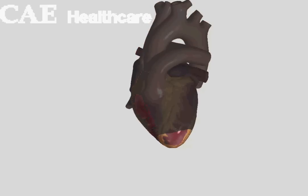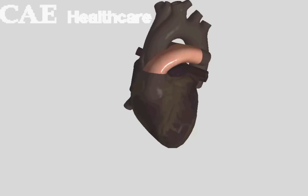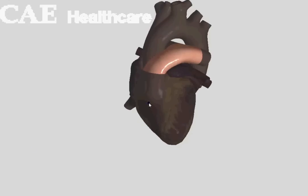That's the right ventricle. That's the apex of the heart. And that is, of course, the pulmonary artery. So the pulmonary artery carries deoxygenated blood to the lungs where it gets oxygenated and then comes back. So this is the main outflow tract of the right ventricle, the pulmonary artery.